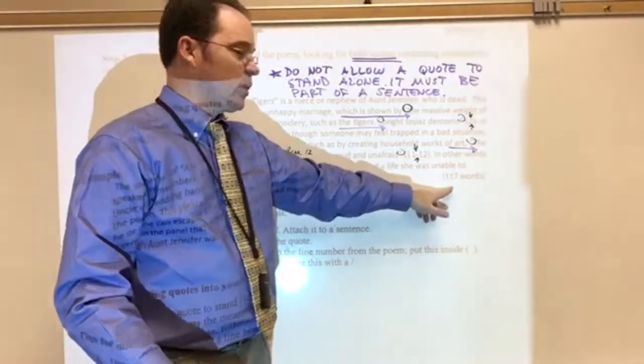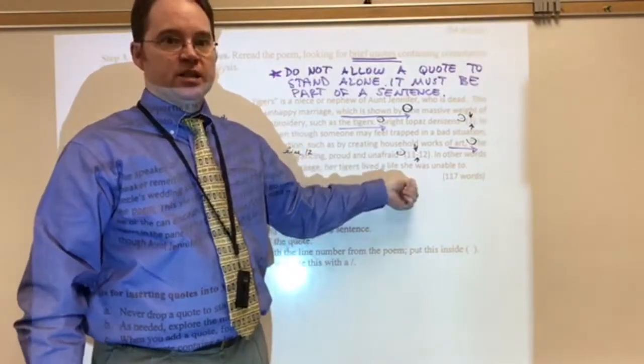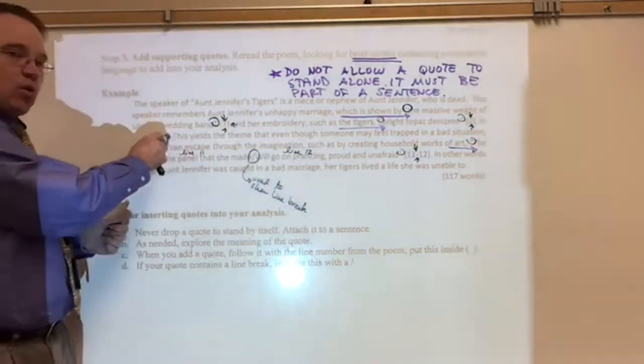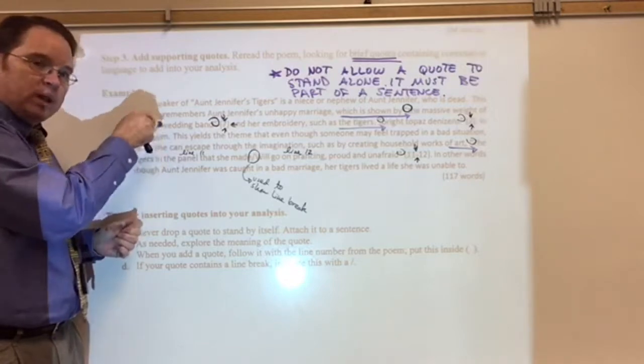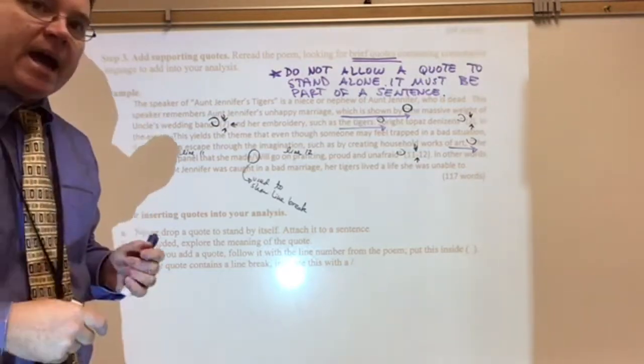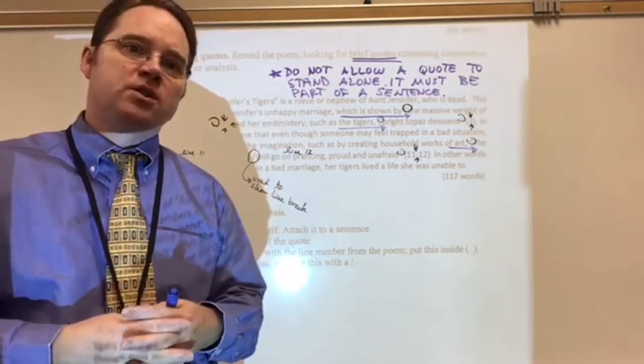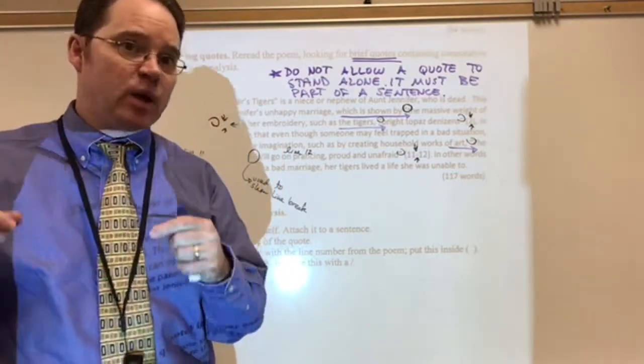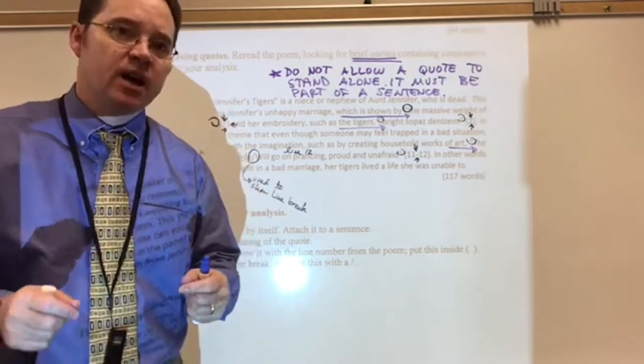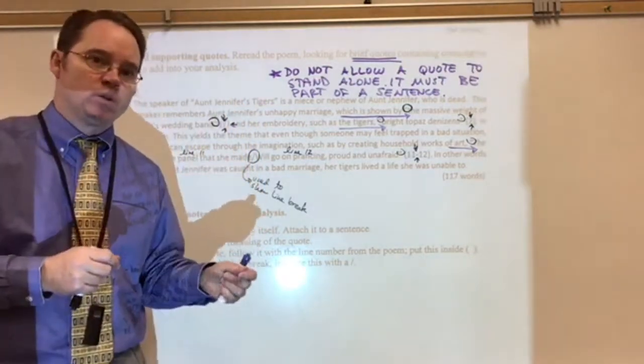Right? So, now here we have 117 words. This is, this right here is our target. This is what we need to do. We have a claim, an idea that comes from our own thoughts and our own words. And then, we have to come up with the evidence in the form of quotes.